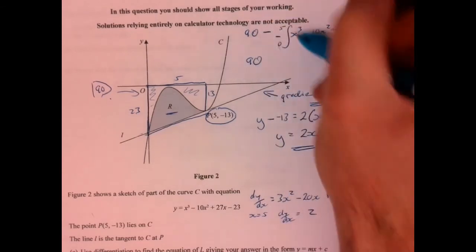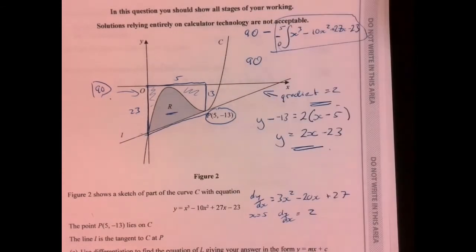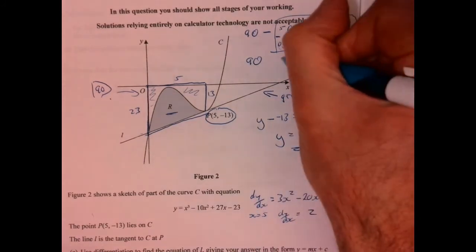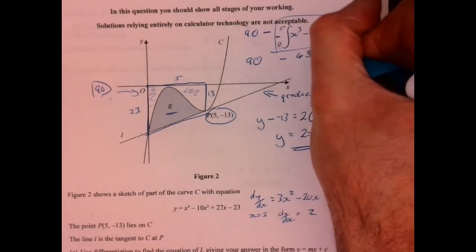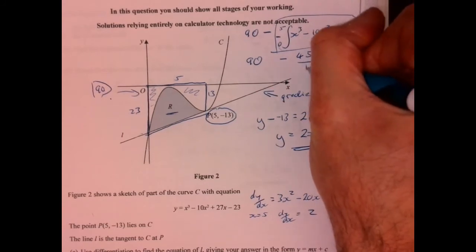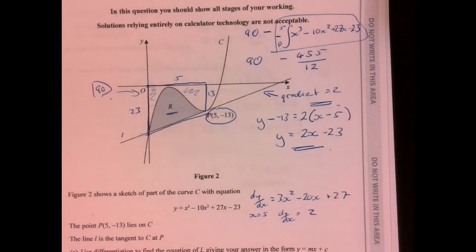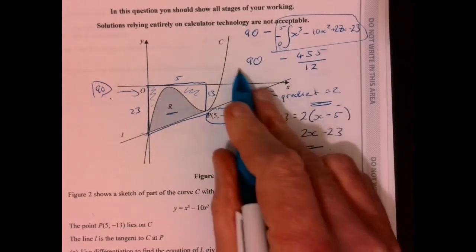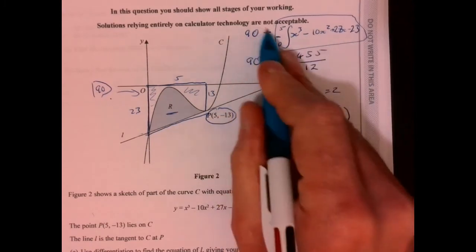We're going to get, when you do this, so working this bit out here just gives you minus 45 and 5/12. So obviously then we're going to, remember that's a negative, so we're effectively adding the negative.